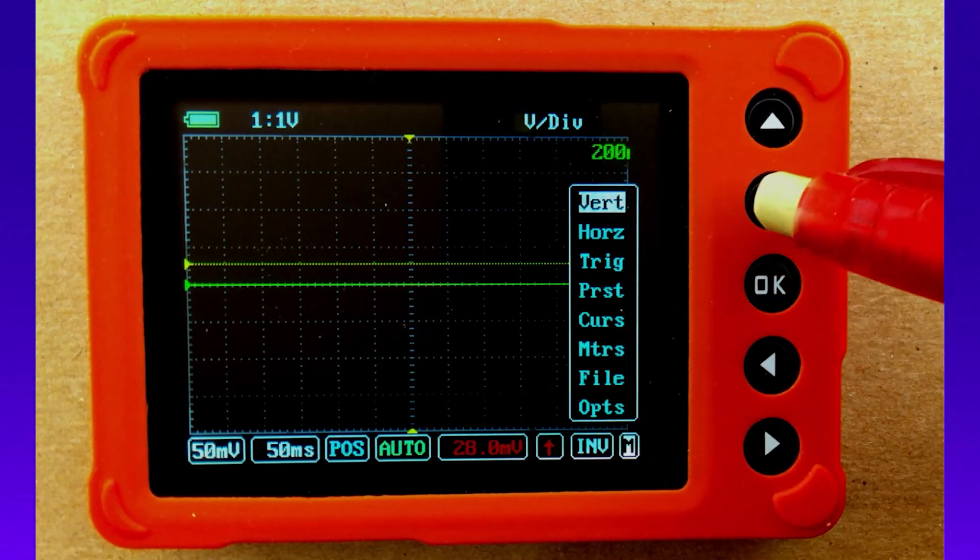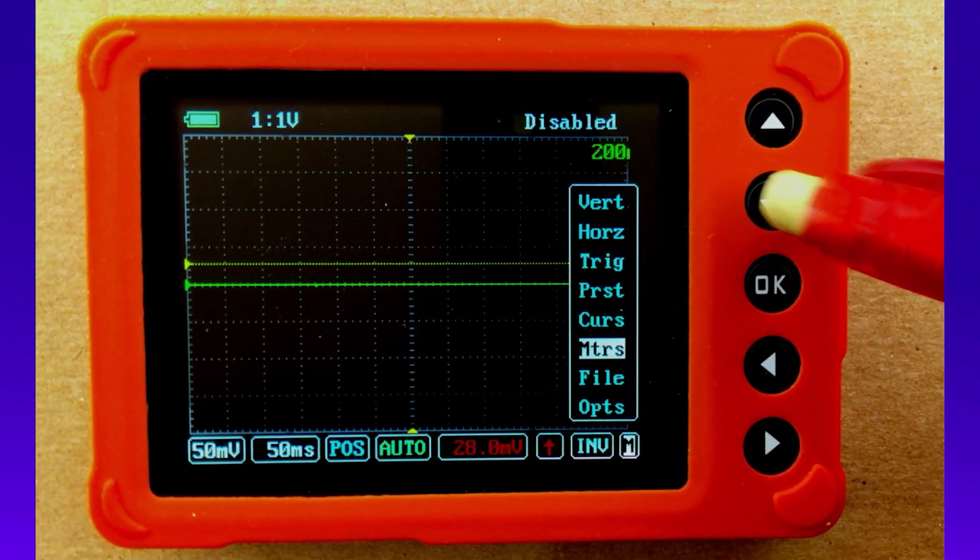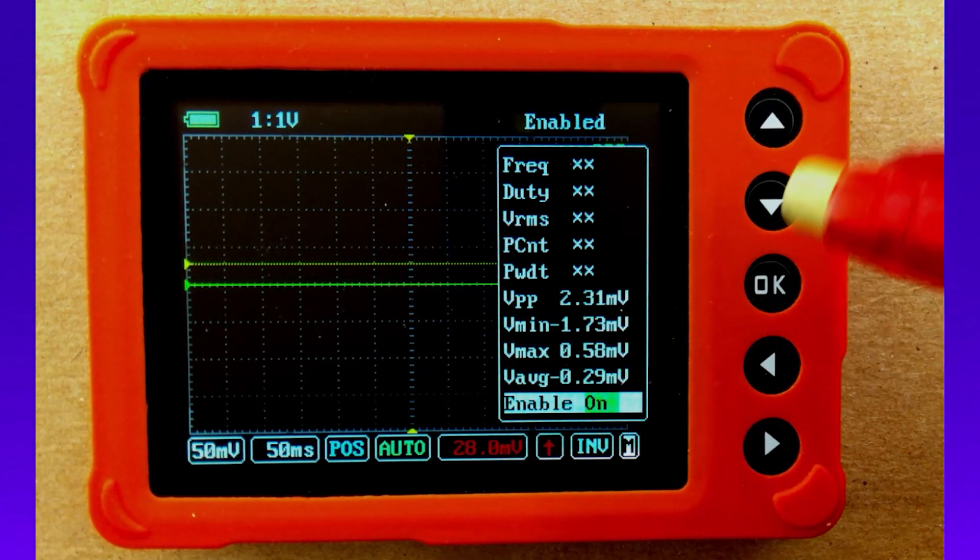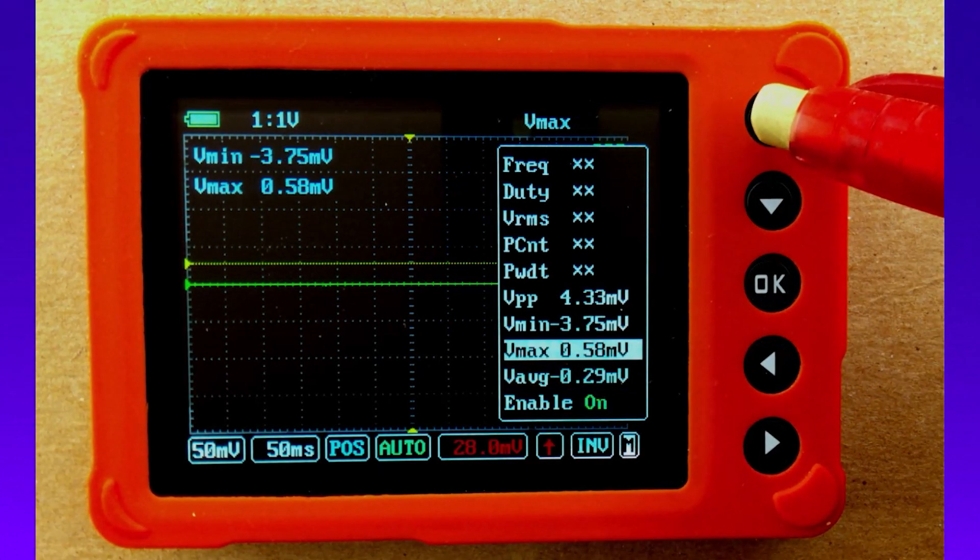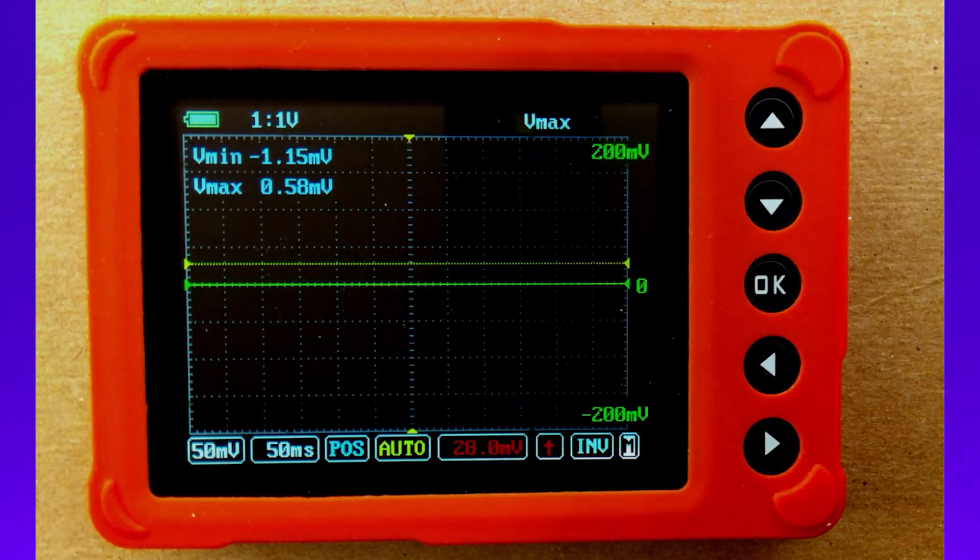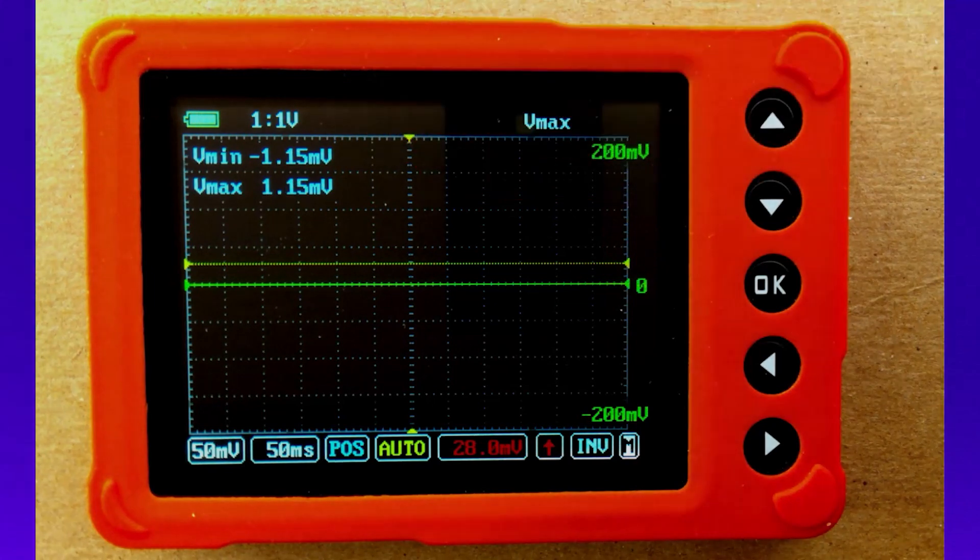Come on over to menu. And let's go down and let's turn on our meters. So we turn the meters on. And then we want to make sure that we're going to have this minimum maximum. So we go ahead and select that. And so now we're all set. We got our minimum maximum on the screen.